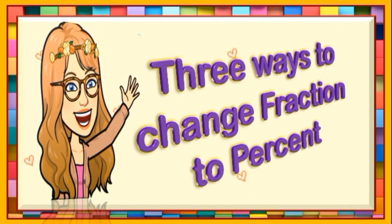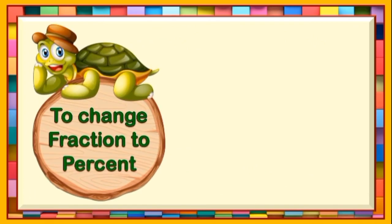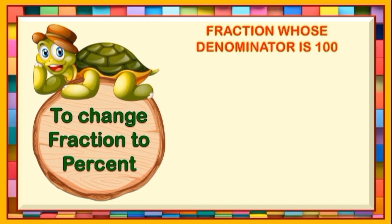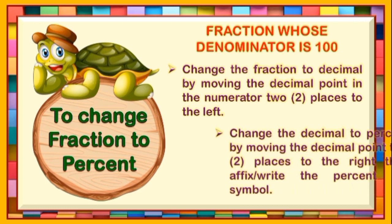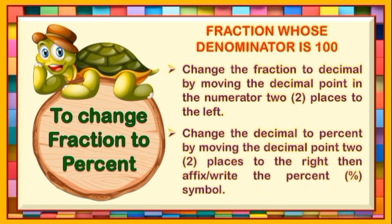Children, there are three ways to change fraction to percent. Let's discuss each one. The first way is changing a fraction to percent when the fraction has a denominator of 100. First, change the fraction to decimal by moving the decimal point in the numerator two places to the left. The second step is to change the decimal to percent by moving the decimal point two places to the right, then affix or write the percent symbol. Let's put this into examples.